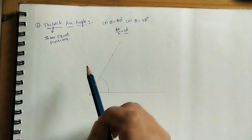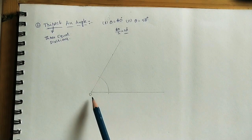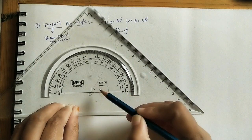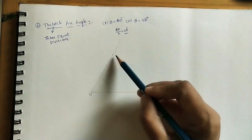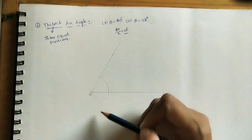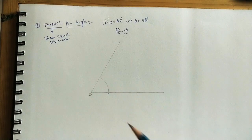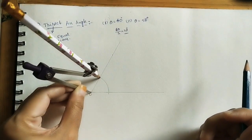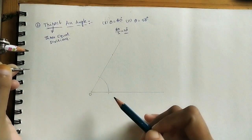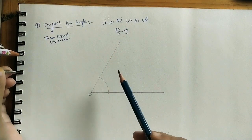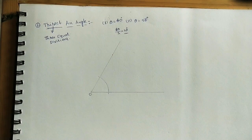Now mark the 60 degree angle. Using a scale, draw one line, then using the protractor, coincide it with the baseline and mark 60 degrees to get this point. Join that point to the initial point to get the line — this angle is 60 degrees. Using a compass, take any radius and mark the arc. Our main aim is to divide this 60 degrees into three parts of 20 degrees each.